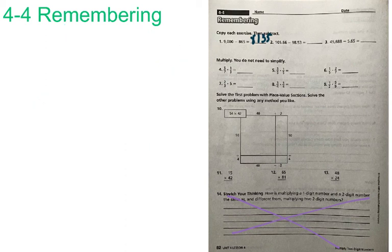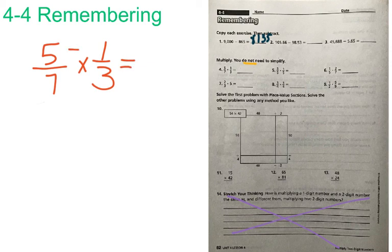Now we are going to look at numbers 4 through 9. It says multiply. You do not need to simplify. Remember, it is important to read those directions. So in this case, you do not need to simplify. So you are done once you have just completed your multiplication. Number 4 is 5 sevenths times 1 third and in multiplication we just multiply straight across. 5 times 1 is equal to 5, 7 times 3 is equal to 21. So you have 5 over 21.